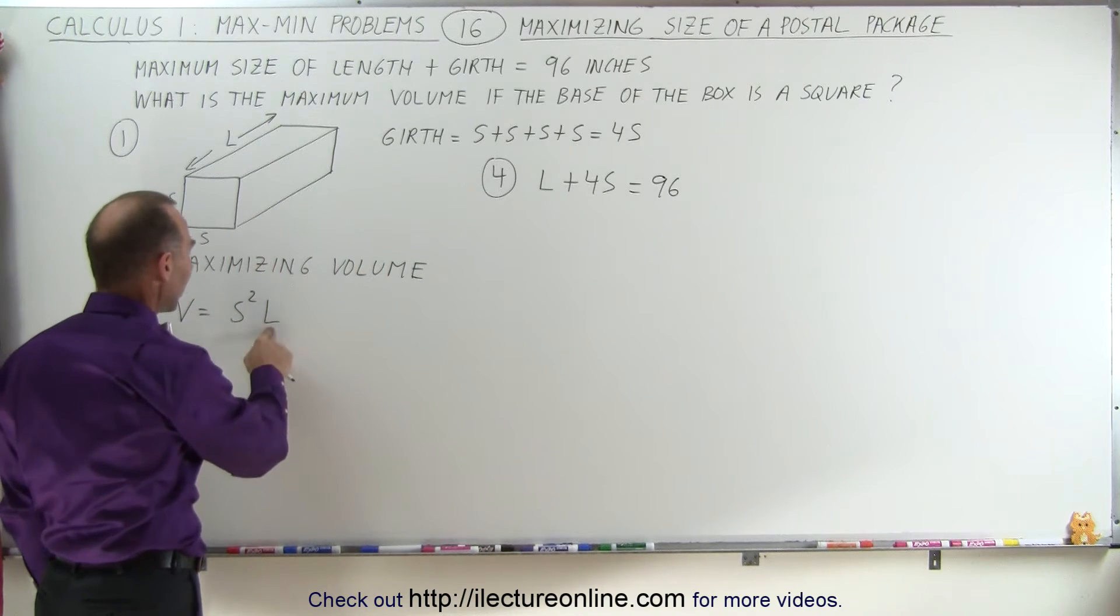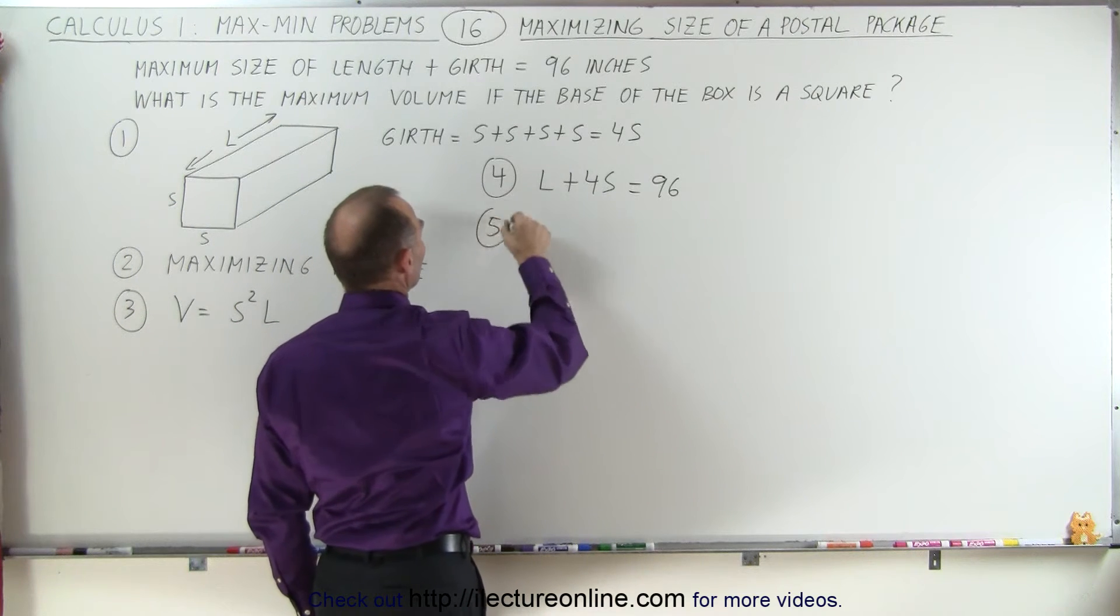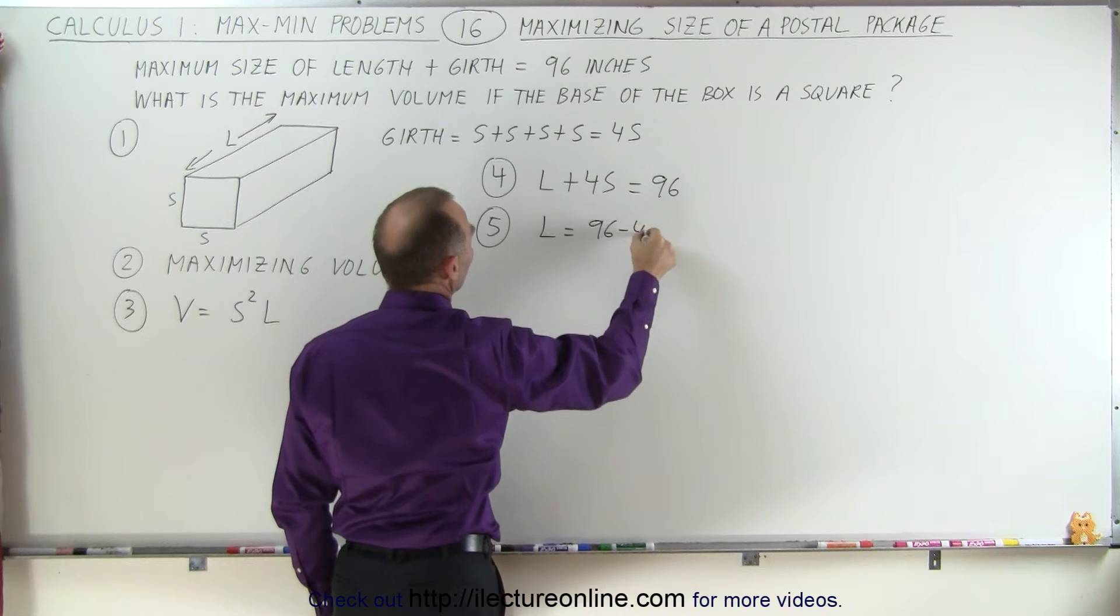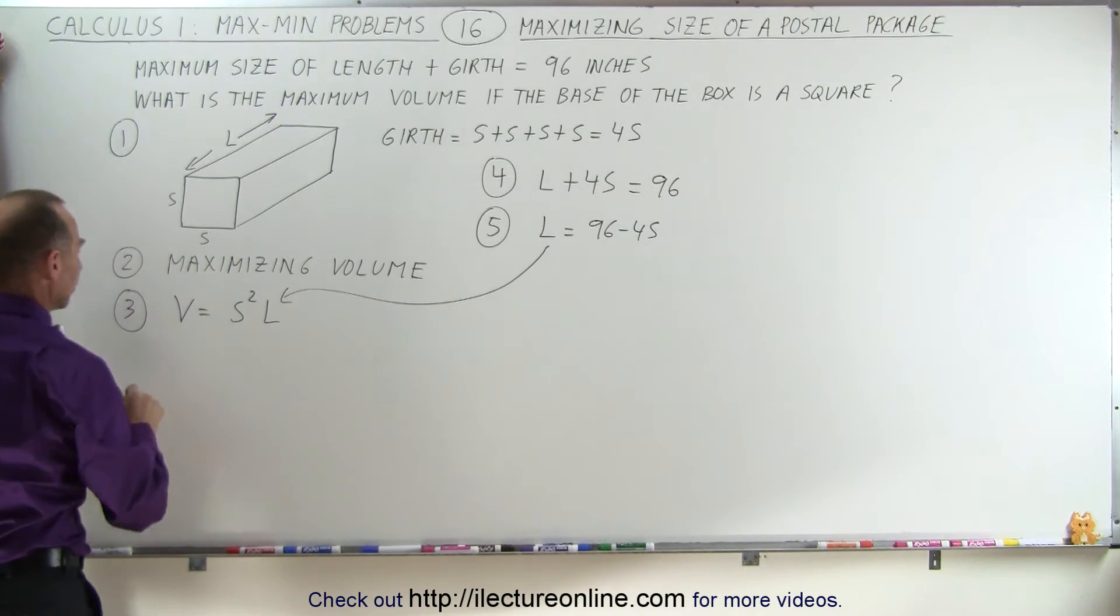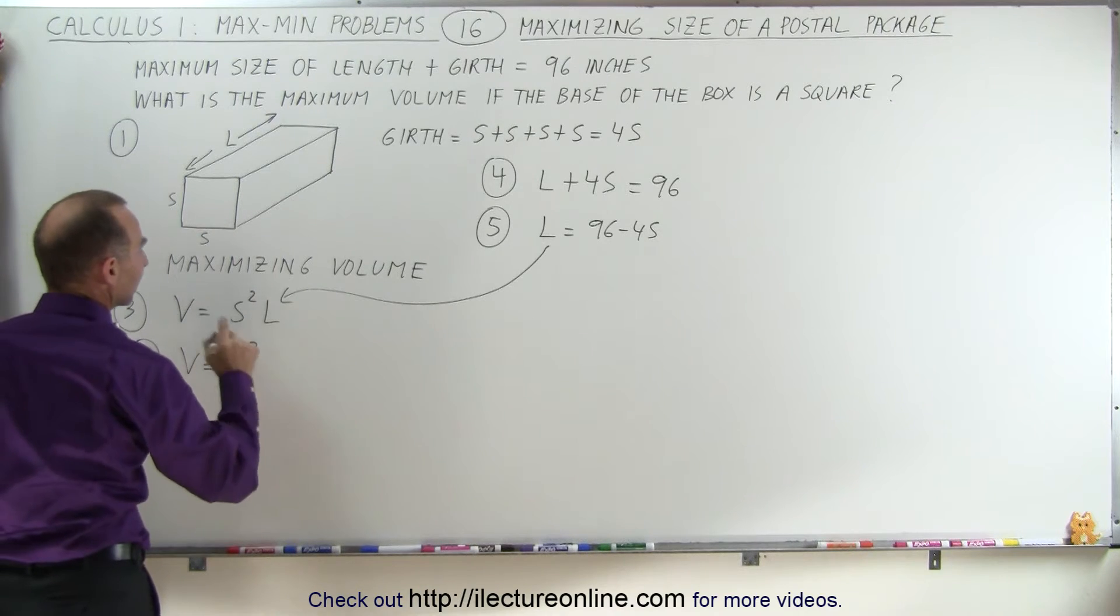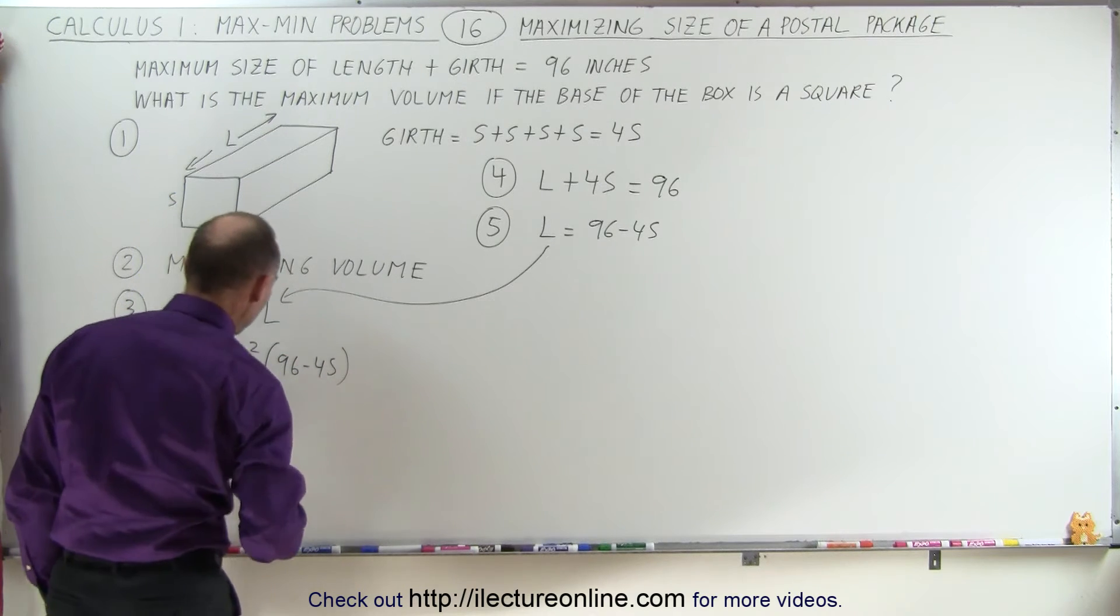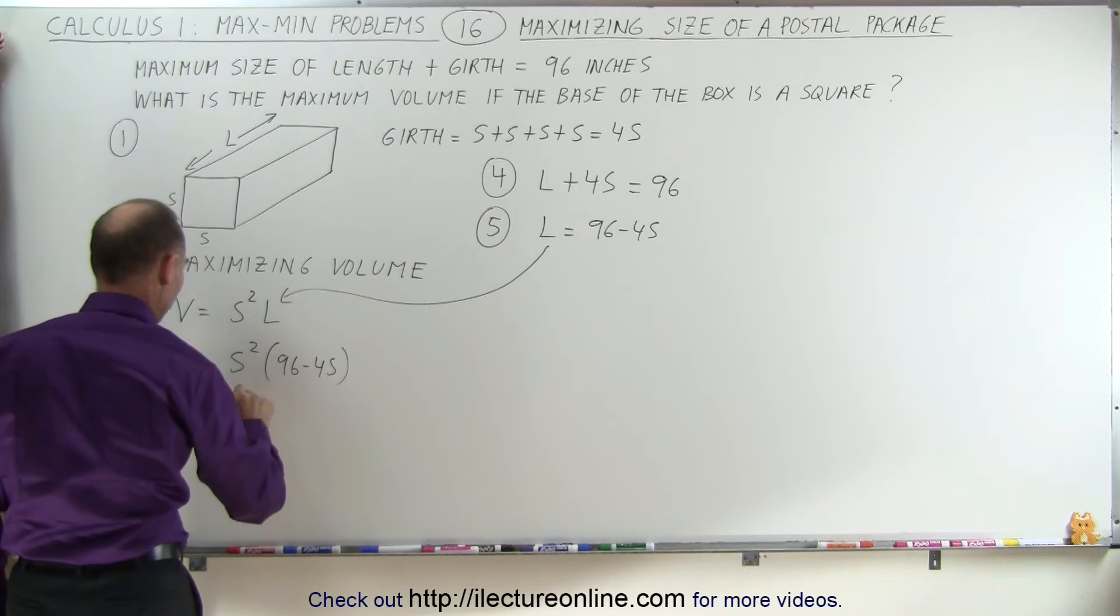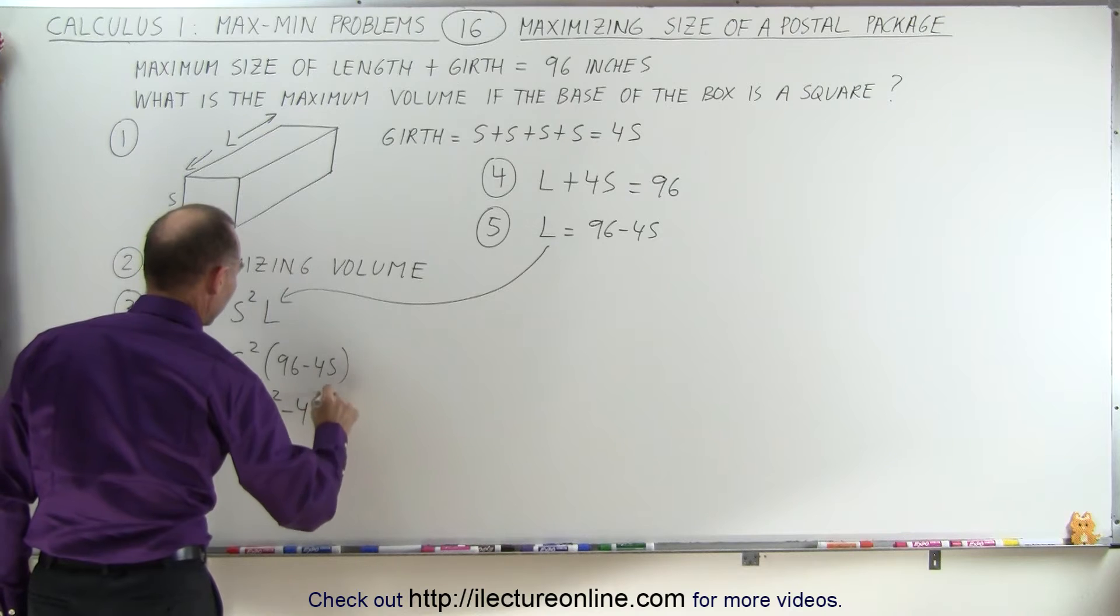Now we can replace L. Number 5: we solve for L. L = 96 - 4s, and substitute that into the volume equation. V = s²(96 - 4s). When we work this out, V = 96s² - 4s³.